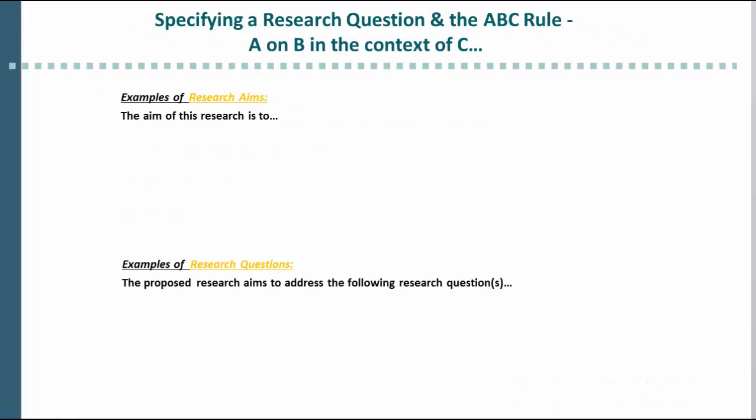The ABC rule basically states that any good research aim has three elements to it: A and B are abstract concepts, and C is the applied context. One template through which you could express the ABC rule in your research aim is to say the aim of this research is to study the determinant of A in the context of C. There is no explicit B there — the B is implied. The B is the determinant; it's what you're trying to find out.